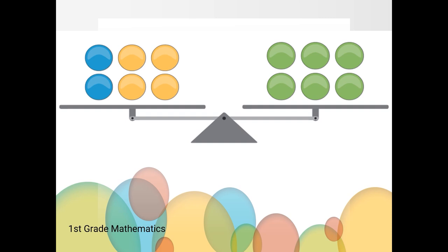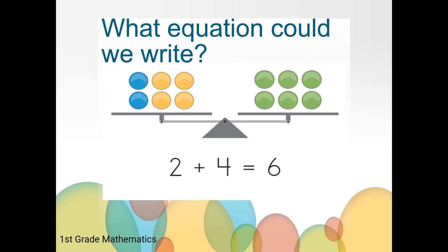What equation could we write to show this scale? When looking at this scale, we see that one side has two blue counters and four orange counters. And the other side of the scale has six green counters. One equation we could write for this balance scale is two plus four equals or is the same as six.